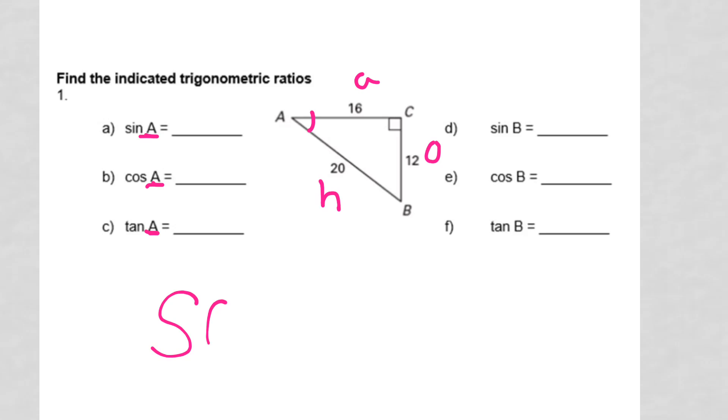I'm going to write out my SOHCAHTOA. And now for sine, I see that I need opposite over hypotenuse. So my opposite is 12, and my hypotenuse is 20. So 12 over 20. That is definitely reducible, so I would reduce that to 3 over 5.